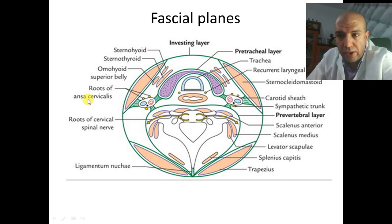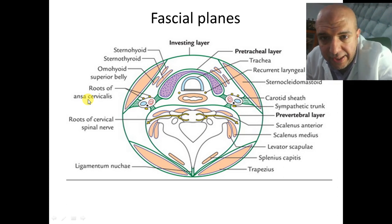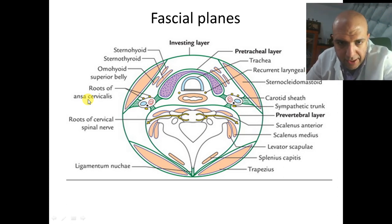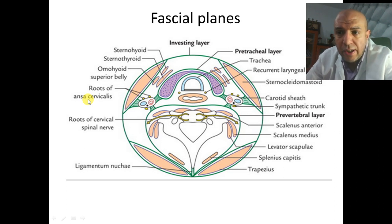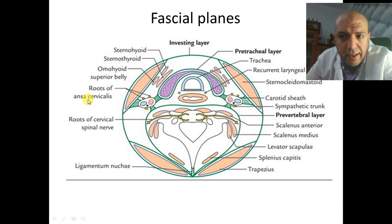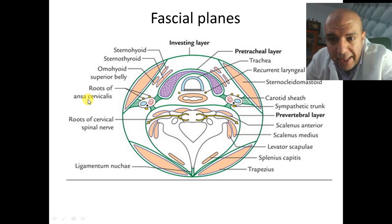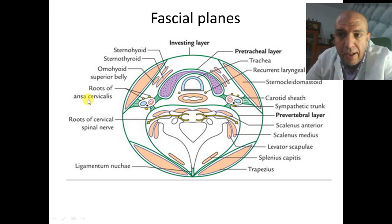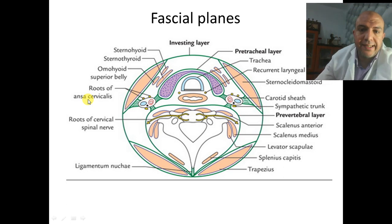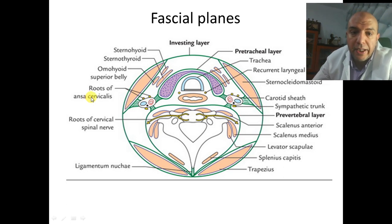The anterior cervical approach is called the Smith-Robinson approach. Another common name is the fascial plane or fascial approach because the entire approach is through fascial layers.